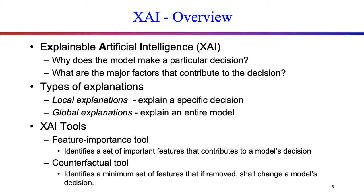XAI tools try to answer the following two questions: Why does the model make a particular decision, and what are the major factors that contribute to the decision? In terms of explanations, there are two types of explanations for AI decisions. One is a local explanation that is created to explain a specific decision, and the other is a global explanation which is created to explain an entire model.